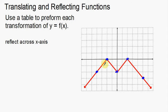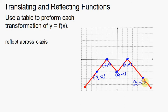I'm going to label out these points again. We have negative 4, negative 2; negative 2, 0; 0, negative 2; 2, 0; and 5, negative 3. So I'm going to use these same points from the same function — I'm just doing something a little bit different. I'm going to reflect across the x-axis now.